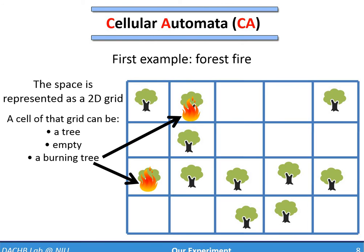Overall, what you've seen is that a CA represents the space as a square grid. And each one of these squares contains something. A tree, an empty space, or a burning tree.